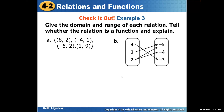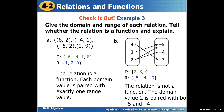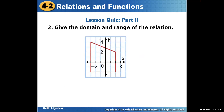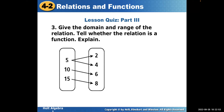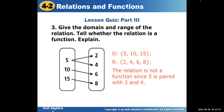Here are some more examples — function or not a function. For the first one, look at the X values: are they repeating? No — so this is a function. For the next one: this X goes to one Y, this X goes to one Y, but this X with value 2 goes to both negative five and negative four. There's no way to get two answers from one input, so this is not a function. Vertical line test: if you drew a line straight down, would it touch more than once? Yes — not a function. And that's the end of this presentation.